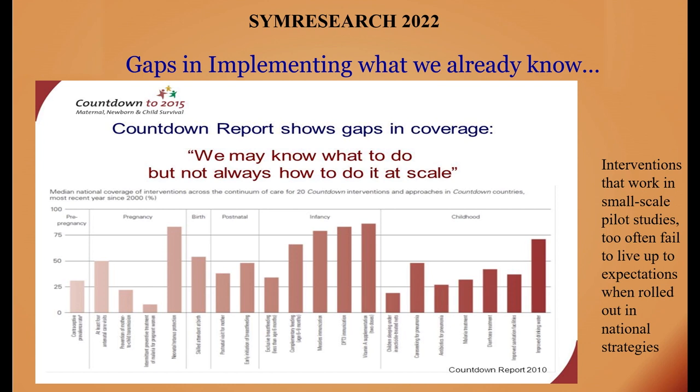I have a slide here using examples from obstetrics, pediatrics, and maternal and child health. If you look at the various bars across the continuum from conception to a few years into childhood — for both mother and child — you will see that none of those bars reach 100%. What is already known, whether it's anemia coverage or malnutrition treatments, has been known for four or five decades, but none have reached 100% coverage.